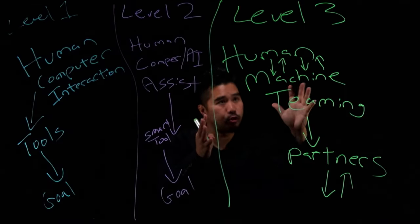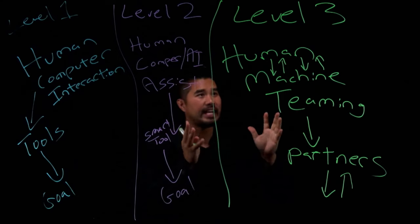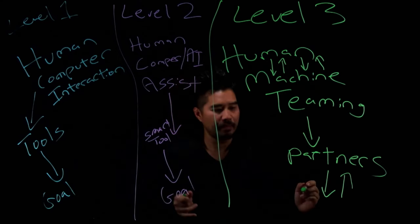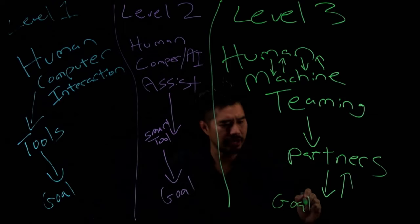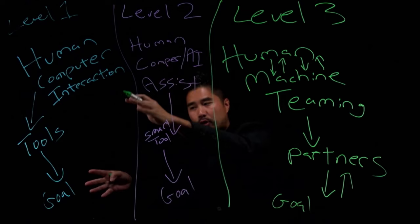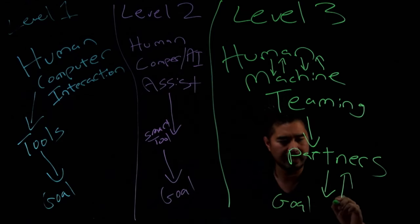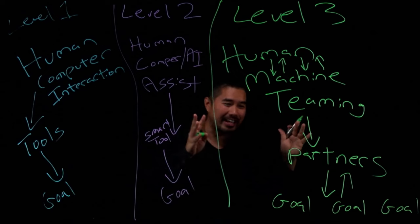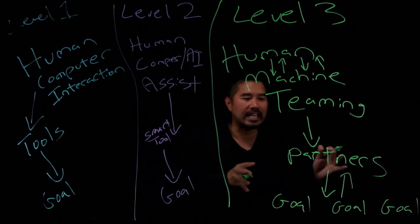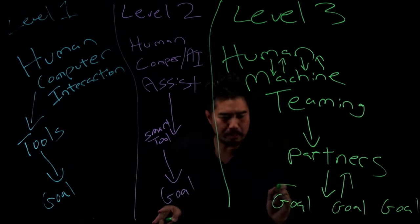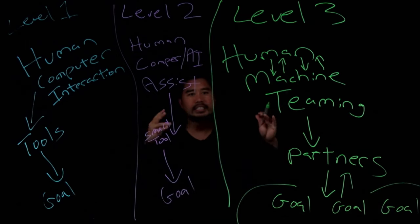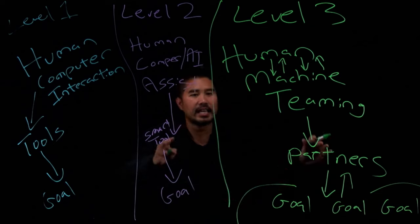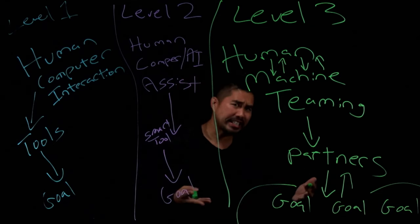But this level three really is about this partnership. And it's not just like maybe one goal per se that's dictated by the humans in these other levels. It's more like it could be this goal, this goal. Or like the end goal is not really there. It might be a bigger like mission, a bigger umbrella. It's not just one single goal to do a specific task. It's helping with this overarching mission or umbrella.